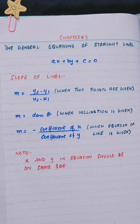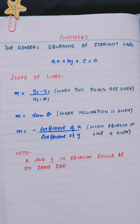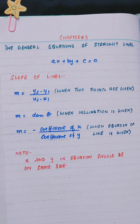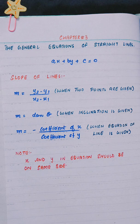We have already discussed the formulas for slope of lines. When two points are given, we use m equals y2 minus y1 divided by x2 minus x1. When inclination is given, meaning you have the angle given, we use m equals tangent theta to find the slope of the line.